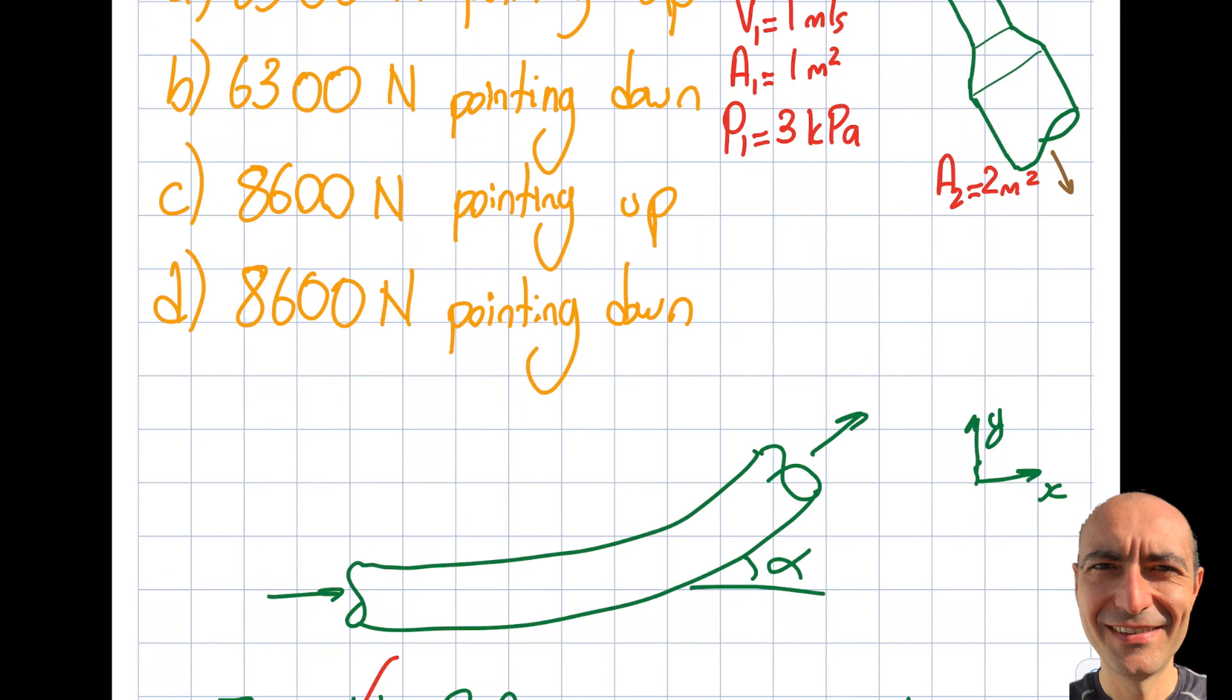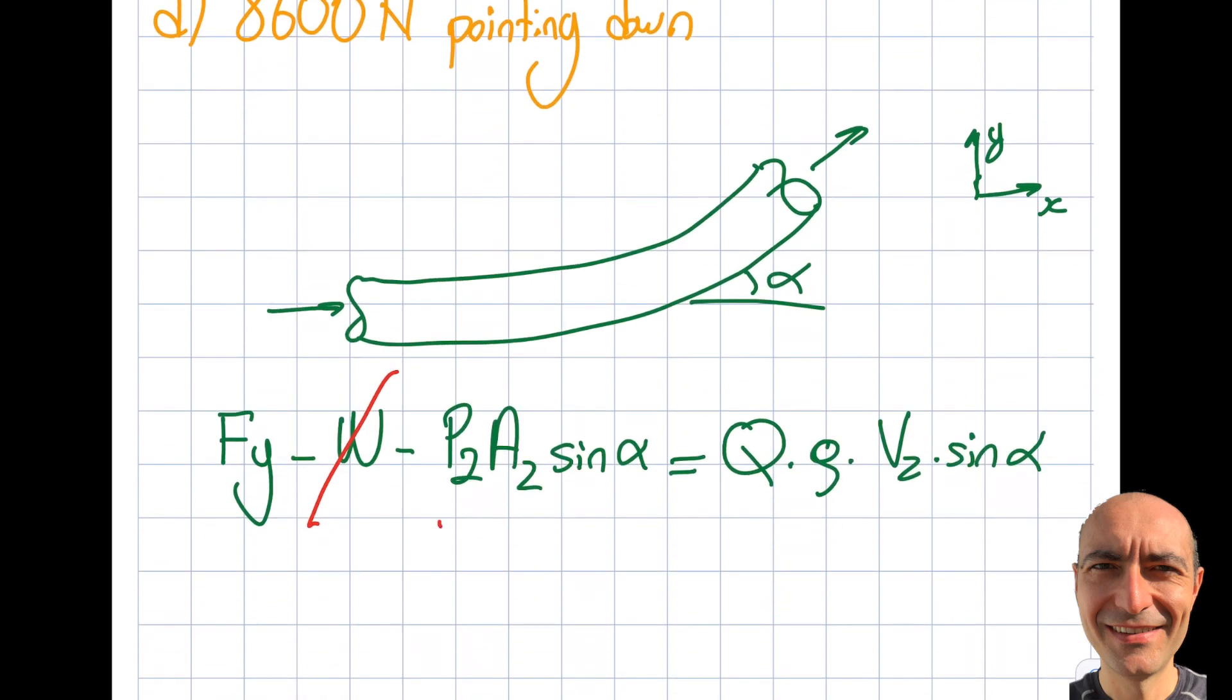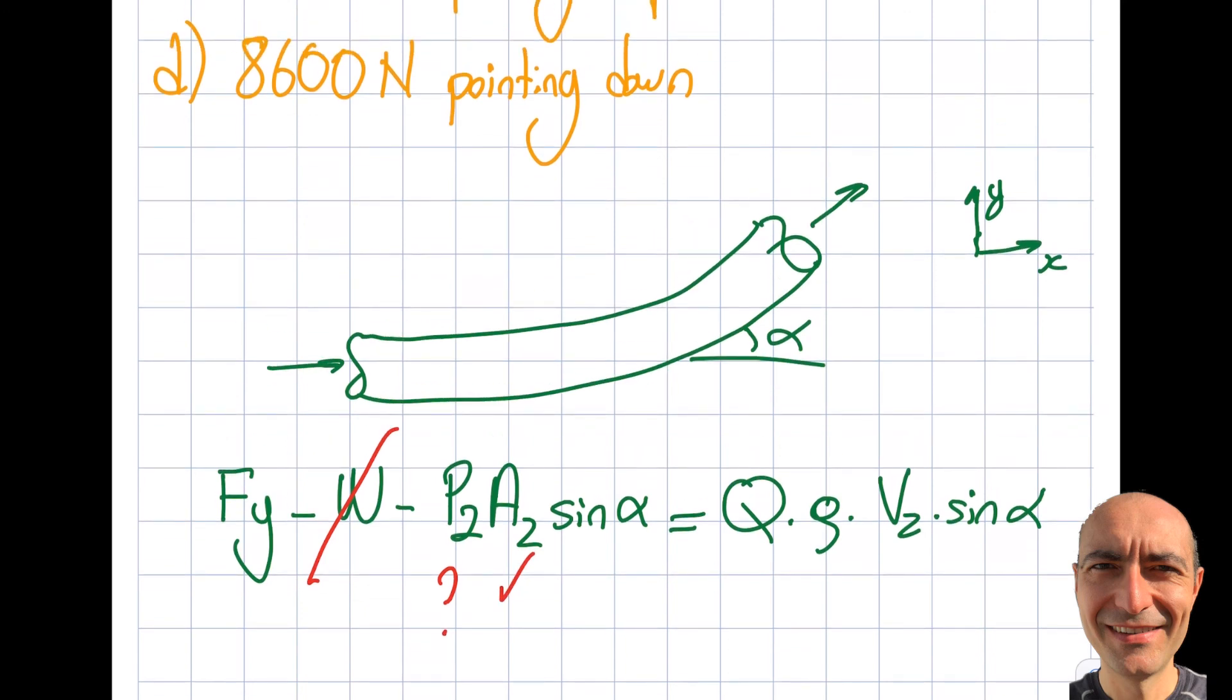What about p2? That's missing, it's a question mark. I don't know that. A2 is given in the question.